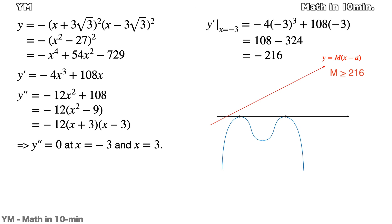That is, if M is greater than or equal to 216, g(x) has less than 3 critical points. So the answer is 216.